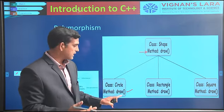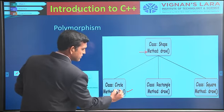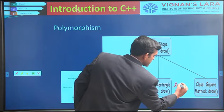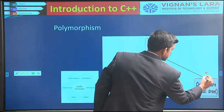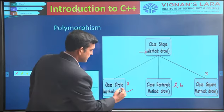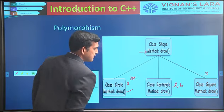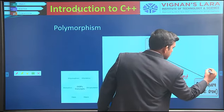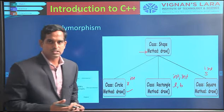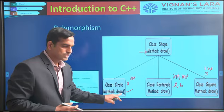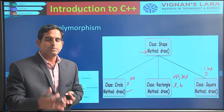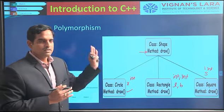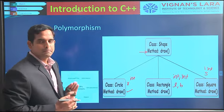When implementing for a circle, the draw function takes only one argument — the radius. For a rectangle, you need length and breadth, so two arguments: int, int. For a square, you need the side as another argument. So the draw method is implemented in three ways with different arguments. Such an implementation is called function overloading, and this function overloading implements polymorphism, where the draw method is taking more than one form.